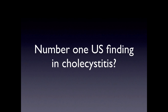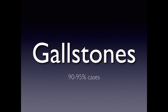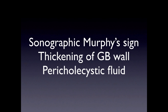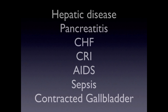The number one ultrasound finding in cholecystitis is — trick question — gallstones, seen in 90-95% of cases. Of course there are a few cases of acalculous cholecystitis, but the vast majority have associated gallstones. Sonographic Murphy sign is relatively sensitive but less so than gallstones — it's only seen in 65-80% of patients with cholecystitis. Other findings associated with cholecystitis include thickened gallbladder wall and pericholecystic fluid, though there are quite a few other causes of gallbladder wall thickening, making this finding in isolation pretty difficult to interpret.